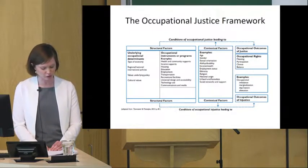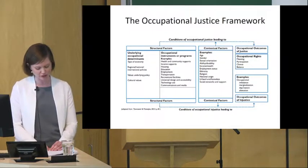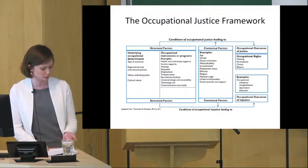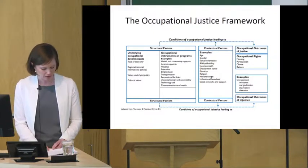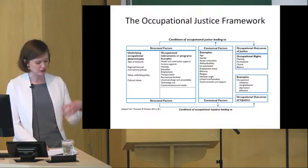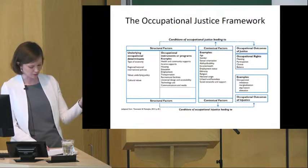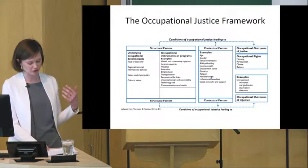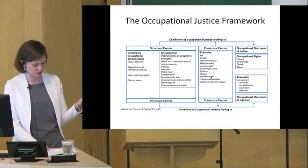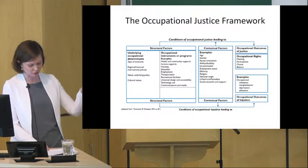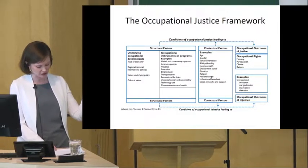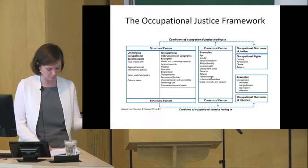Alienation occurs when people are required to participate in occupations they find meaningless or receive little recognition or reward. To analyze an issue with this framework you first identify your outcome, then work your way back to identify the factors that contributed to it. It's the combination of both structural and contextual factors that lead to a specific occupational outcome.